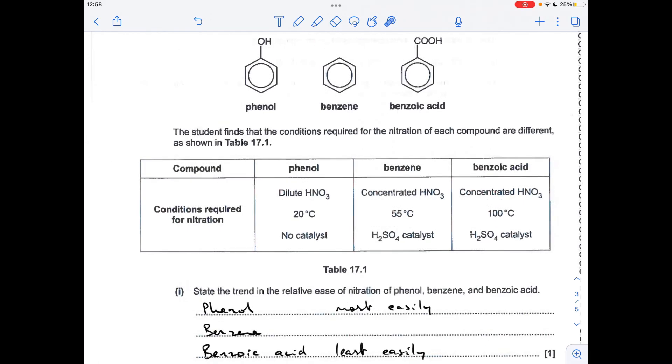Next part: the trend in relative ease of nitration. We're using the conditions to determine the trend. Phenol is nitrated most easily because it only needs dilute nitric acid. Benzene is the next most easily nitrated because its temperature requirement is a bit lower than benzoic acid.